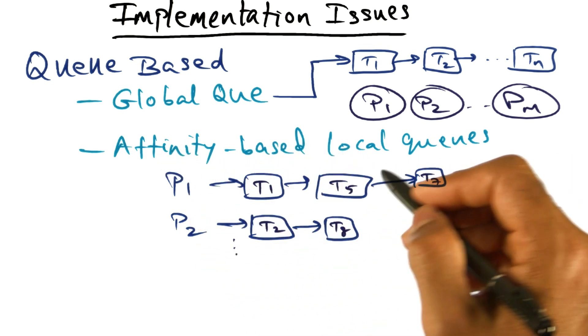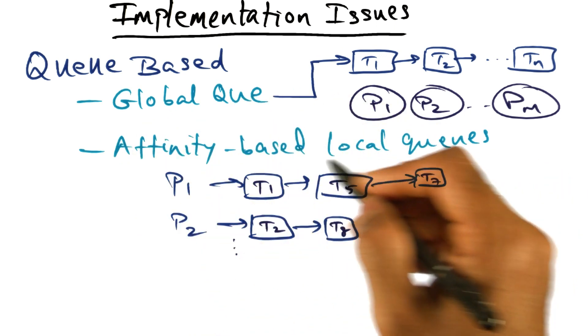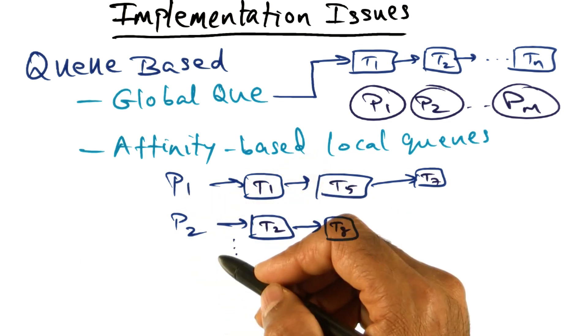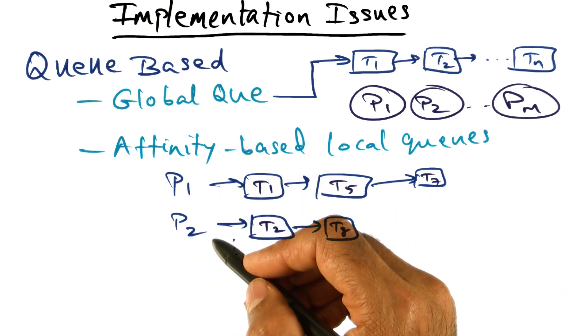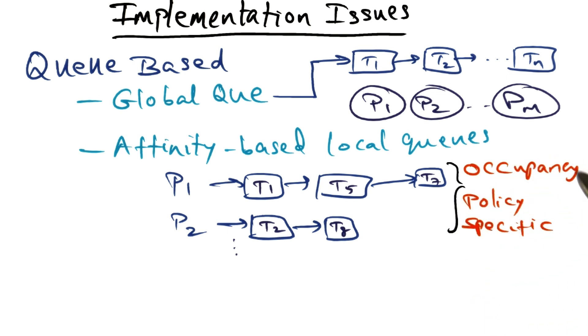And these local queues are going to be based on affinity. And the particular organization of the queues in each of these processors, these local queues for each of these processors, is going to depend on the specific policy that we're going to use.